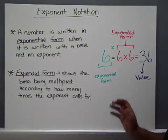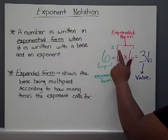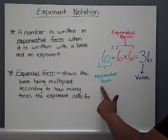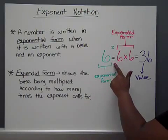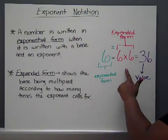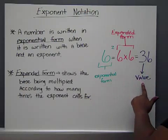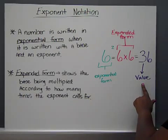So, for example, if we have a base of 6 and the exponent is 2, this is an example of exponential form. But, we could rewrite this as 6 times 6, which we call expanded form. And, we all know that 6 times 6 gives us the value, which is 36.